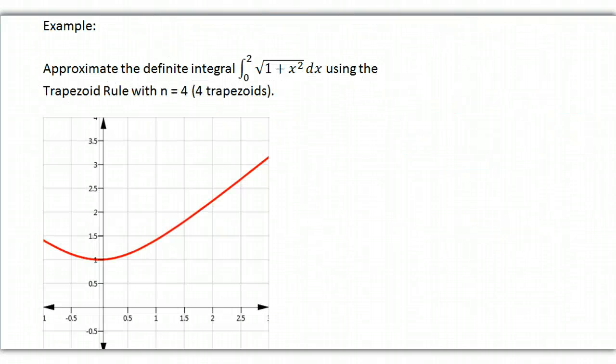So let's apply this to a real problem. We're going to approximate the definite integral of the square root of 1 plus X squared, DX, going from 0 to 2, using the trapezoid rule with N equal 4. So we want four trapezoids. So to figure out delta X, I'm going to go upper limit minus lower limit divided by the number of trapezoids I want, and each trapezoid is going to have a delta X of 1 half.